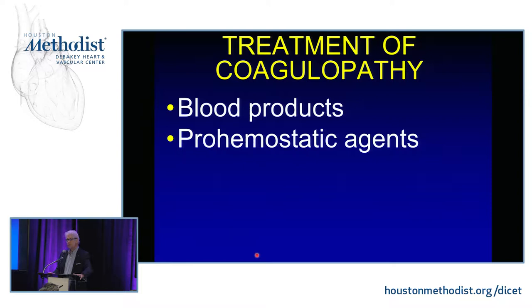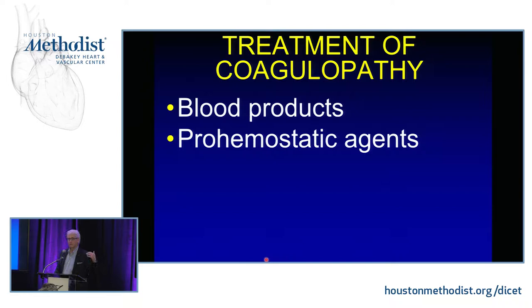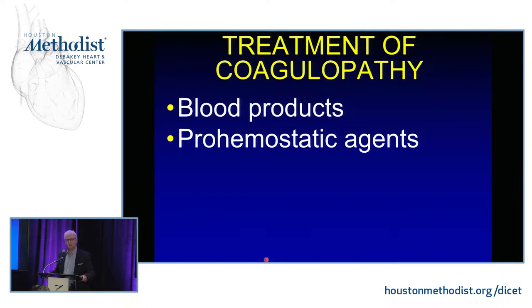What we're really going to talk about is the treatment of coagulopathy from two major perspectives: blood products and pro-hemostatic agents. I'll focus on pro-hemostatic agents and therapeutic approaches, as well as algorithms. The red cell story is low-hanging fruit — everybody focuses on red cells. Where we can really make progress is in reducing allogeneic components of platelets, plasma, cryoprecipitate, and other components. That's been my focus.